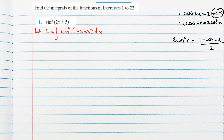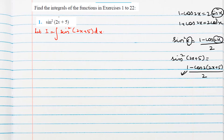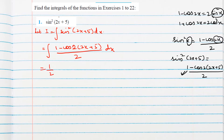Here the angle is x, so twice of x appears. For our question it is sin²(2x + 5), so we write (1 − cos(2 × (2x + 5))) / 2, which substitutes into the integral. We take 1/2 outside and write 1 − cos(4x + 10).